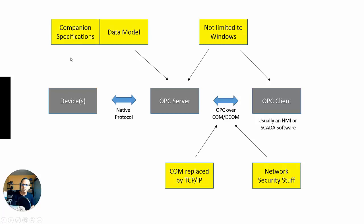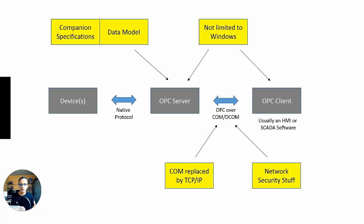The fifth area, which piggybacks off of the data model, is companion specifications. There are going to be more and more companion specifications. So these five aspects are what I've seen so far and what I'll be exploring on a practical level — looking at the theory of these various aspects towards practical implementation in software. Please feel free to comment and join me on this journey, and let's learn about OPC UA together. Thanks.